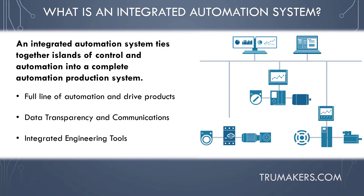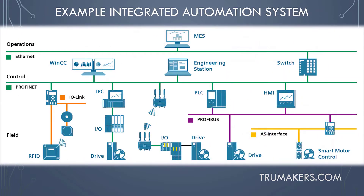Data transparency and communications covers IO blocks right up to the manufacturing execution system. Integrated engineering tools cover device configuration and project management. The manufacturing execution system ensures that quality and efficiency are built into the manufacturing process and that it is systematically enforced.